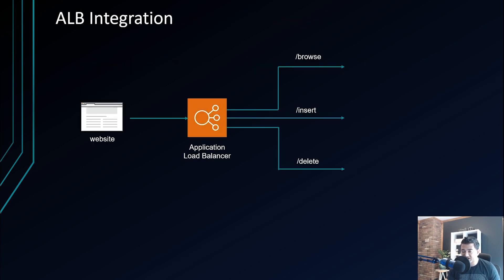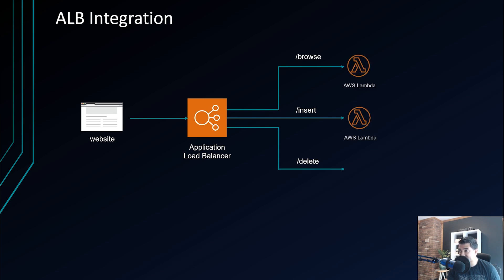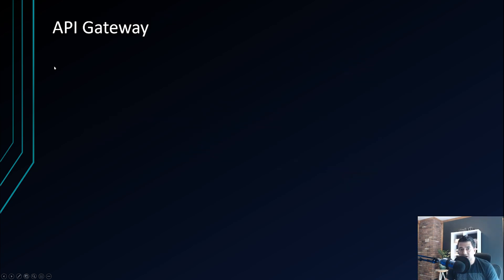A typical ALB integration would be your website sending requests to the Application Load Balancer, where you configure different routes. For example, if the incoming path has /browse or /insert, it may forward to target groups with AWS Lambda; if the path has /delete, it forwards to AWS EC2.